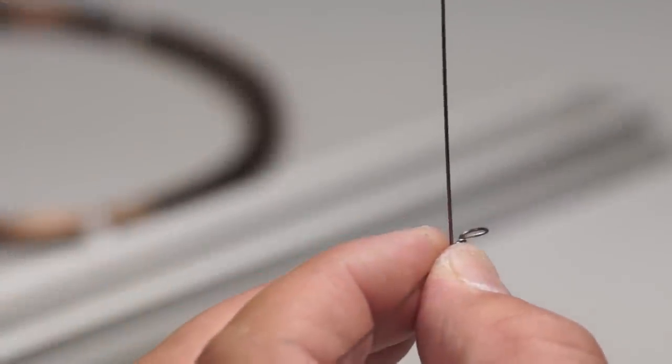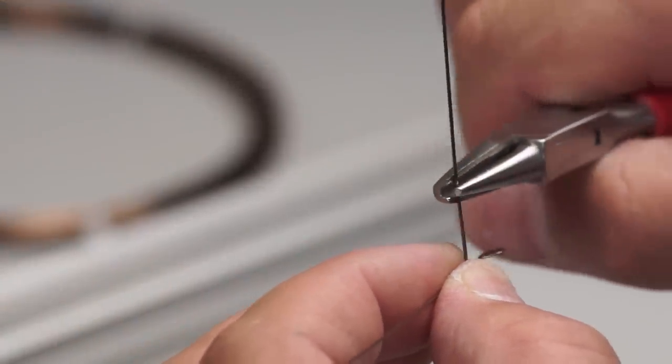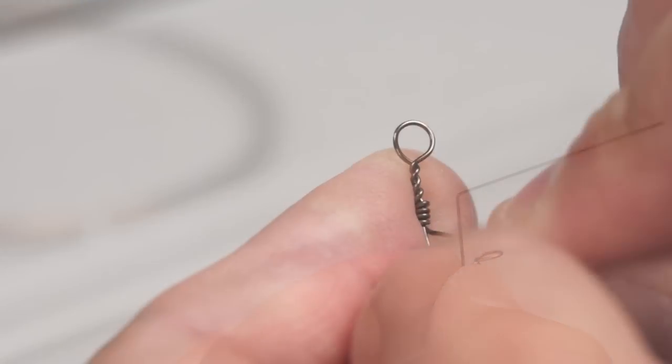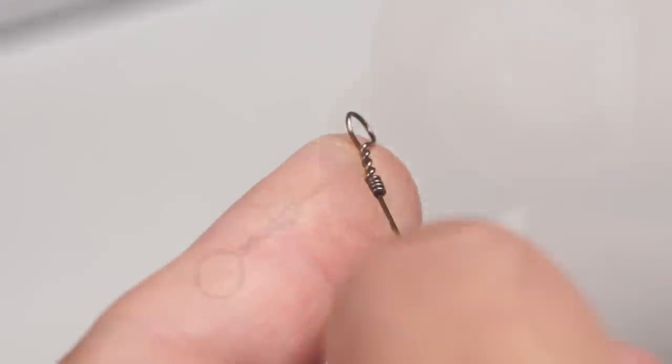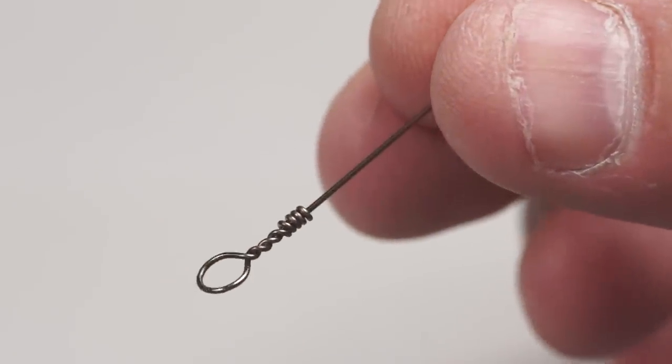By making another bend I can form a handle which I can use to rock the wire backwards and forwards until it snaps off cleanly. And that's the first loop and twists complete.